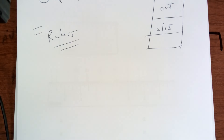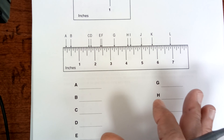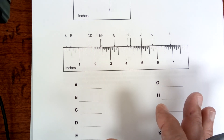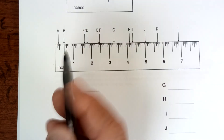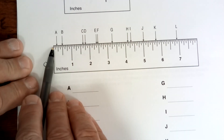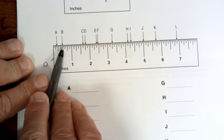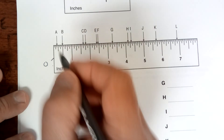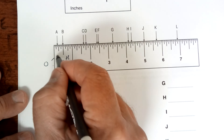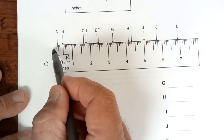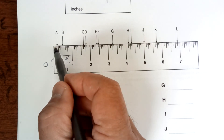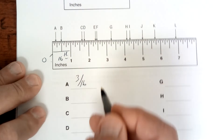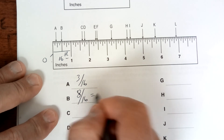We're going to talk about rulers — do you know how to use a ruler? Look up here. The first thing you do is count how many divisions you have. Starting from zero: 1, 2, 3, 4, 5, 6, 7, 8, 9, 10, 11, 12, 13, 14, 15, 16 — this ruler is divided into sixteenths because every inch has sixteen marks. So point A would be three sixteenths.